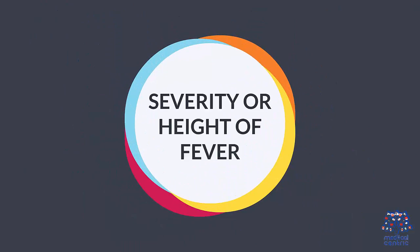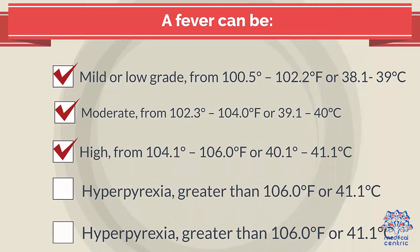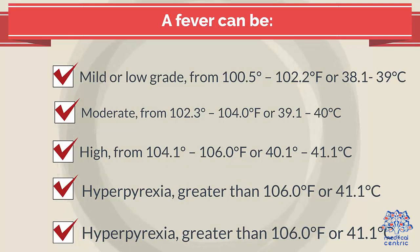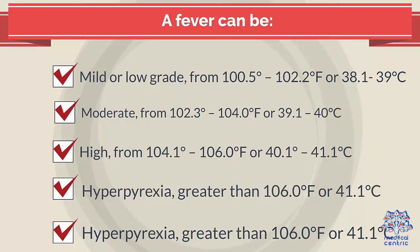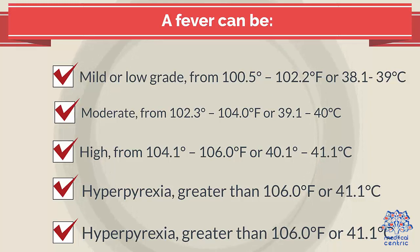Severity or height of fever: Fever can be mild or low-grade from 100.5 to 102.2 degrees Fahrenheit, or 38.1 to 39 degrees Celsius. Moderate from 102.3 to 104 degrees Fahrenheit, or 39.1 to 40 degrees Celsius. High from 104.1 to 106 degrees Fahrenheit, or 40.1 to 41.1 degrees Celsius. Hyperpyrexia is greater than 106 degrees Fahrenheit, or 41.1 degrees Celsius.